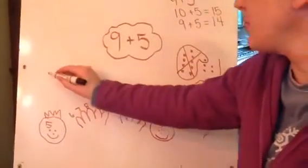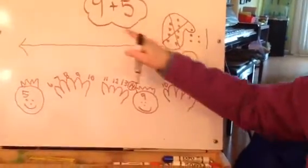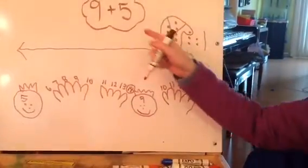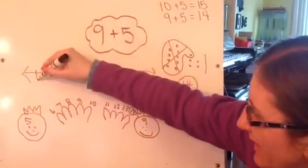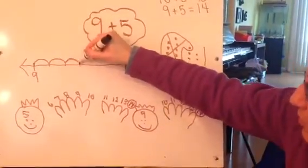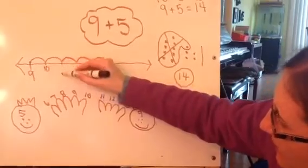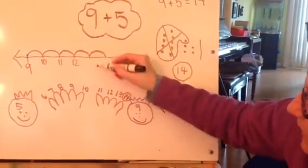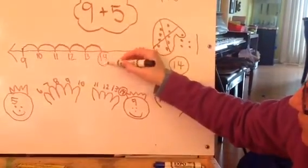Or I could make a number line. And I could start at 9 and add 5 more. Or I could start at 5 and add 9 more. I think I'm going to start at 9 and add 5 more. 1, 2, 3, 4, 5. This would be 10, 11, 12, 13, 14.